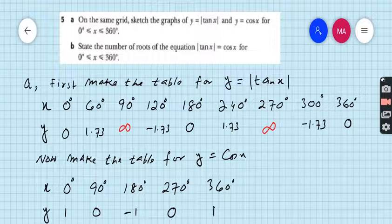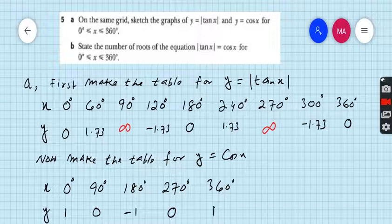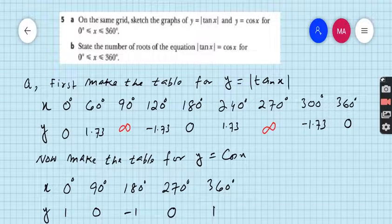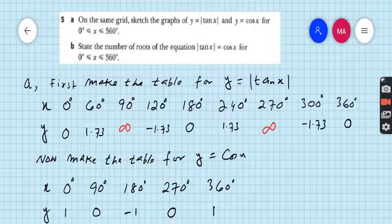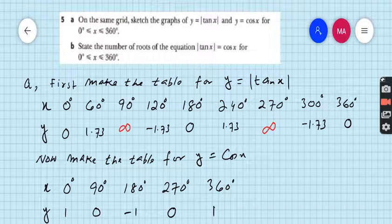For 0 degrees the value is 0. For 60 degrees the value is 1.73. For 90 degrees the value is undefined. For 120 the value is minus 1.73. For 180 the value is 0. For 240 the value is 1.73. For 270 degrees the value is undefined. For 300 the value is minus 1.73 and for 360 degrees the value is 0.